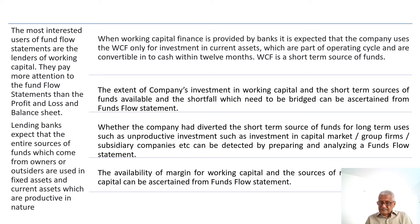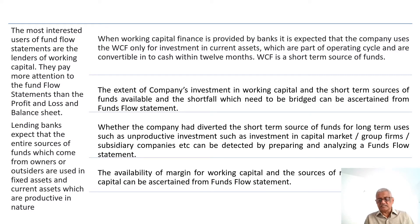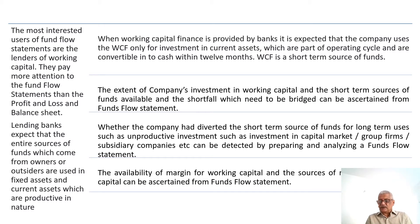Whether the company had diverted short-term sources of funds for long-term uses such as unproductive investment in the capital market, group firms, subsidiary companies, etc., can be detected by preparing and analyzing a fund flow statement. The availability of margin for working capital and the sources of working capital can be ascertained from it. That is why banks thoroughly scrutinize the funds flow statement to ensure adequate margin and no diversion of funds for unproductive purposes.